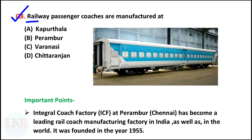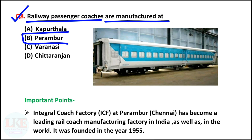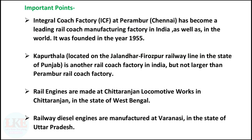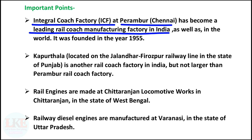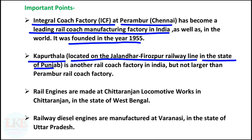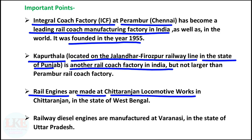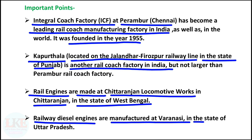Question number 8: railway passenger coaches are manufactured at Perambur. The Integral Coach Factory (ICF) at Perambur in Chennai has become a leading rail coach manufacturing factory in India as well as in the world. It was founded in 1955. Kapurthala, located on the Jalandhar-Firozpur railway line in Punjab, is another rail coach factory but not larger than Perambur. Also remember: rail engines are made at Chittaranjan Locomotive Works in West Bengal, and railway diesel engines are manufactured at Varanasi in Uttar Pradesh.